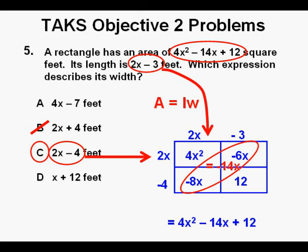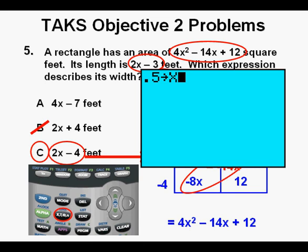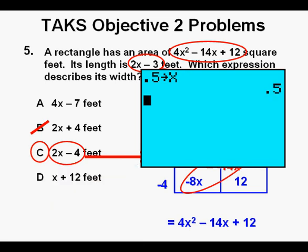One way we can check multiple choices like these is to check for expression equivalency in our graphing calculator. First, enter a number that you want for x. I used 0.5. Next, press the storage key above the on key. Then press the x key on the keypad. Press Enter. We've stored the value of 0.5 for x. Next, enter the expression for area, 4x squared minus 14x plus 12. Press Enter.